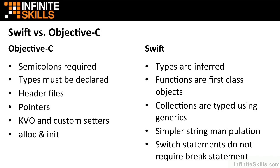In Objective-C, when you wanted to monitor a class or watch certain values within your class to see when they get changed, you'd either have to use key-value observation or write your own custom setters to trap those events. Swift provides other mechanisms more simply to watch and observe values and trigger events after those happen.